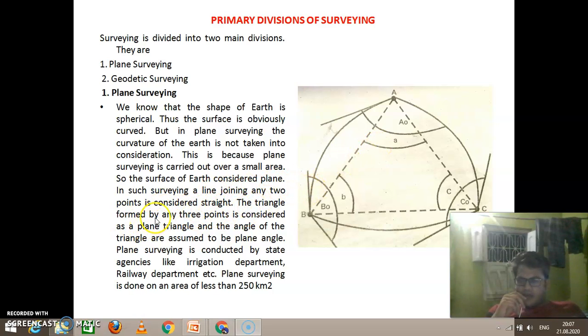The triangle formed by any three points is considered as a plane triangle. Here you see the dotted line triangle, this is the plane triangle. The angles of the triangle are assumed to be plane angles - angle B, angle A, angle C.